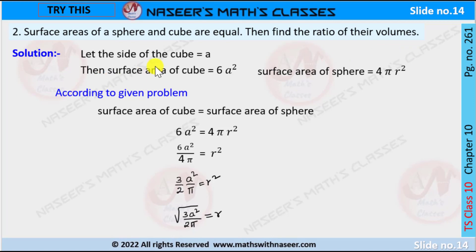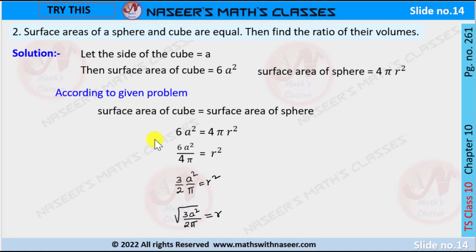Let the side of the cube be 'a', then its surface area is equal to 6a². The total surface area of the sphere is equal to 4πr². According to the given problem, the surface area of the cube equals the surface area of the sphere, so we substitute these values.